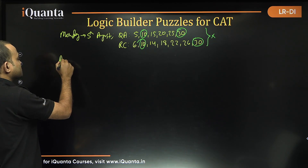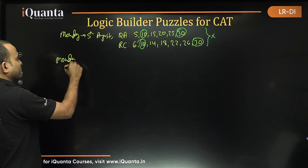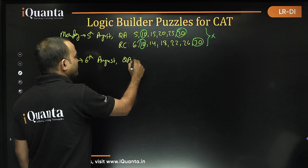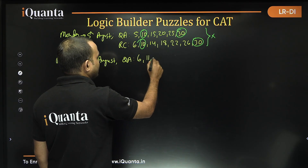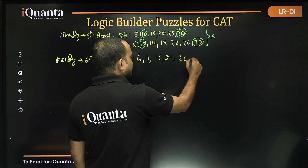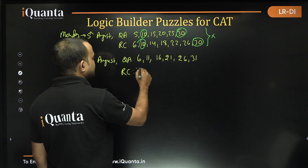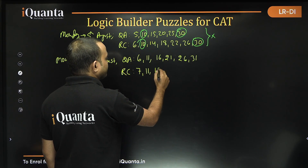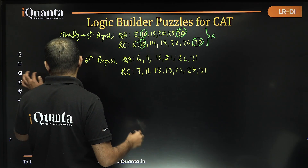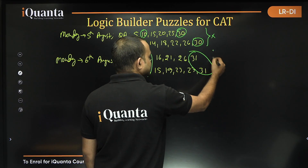When Monday falls on 6th of August, QA will be taught on: 6th, 11th, 16th, 21st, 26th, and 31st. RC will be taught on: 7th, 11th, 15th, 19th, 23rd, 27th, and 31st. Once again, we have 2 common days — 11th and 31st — so this case is also not valid.